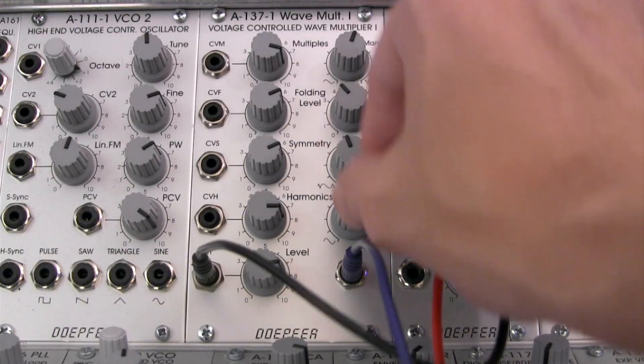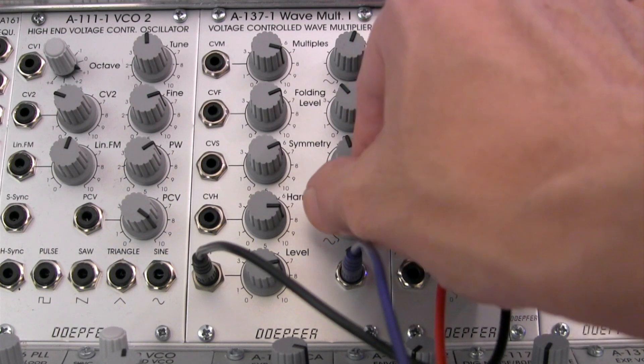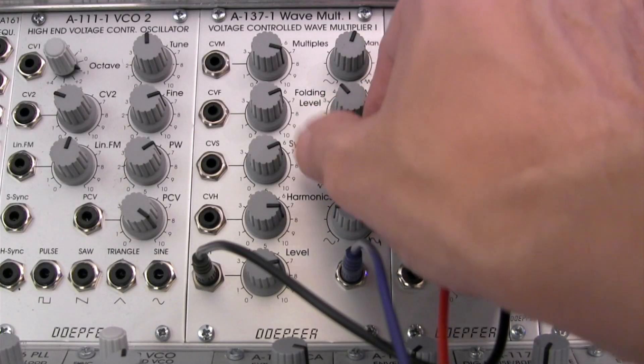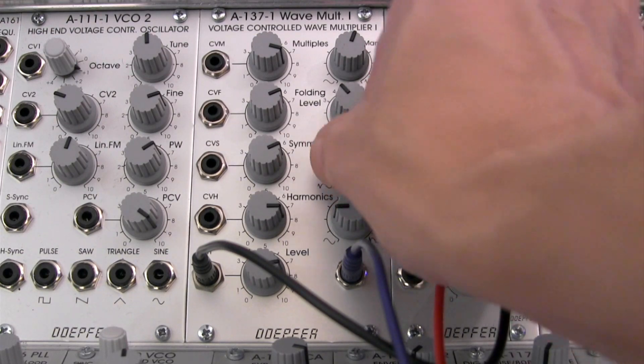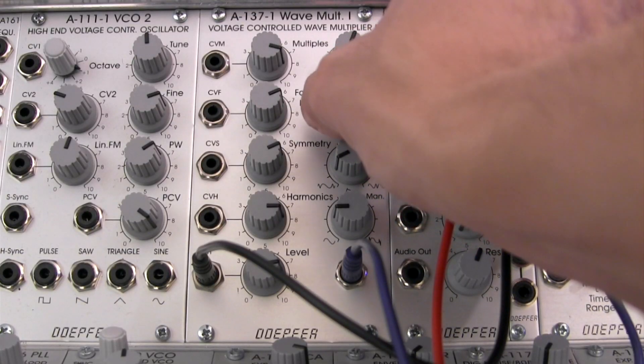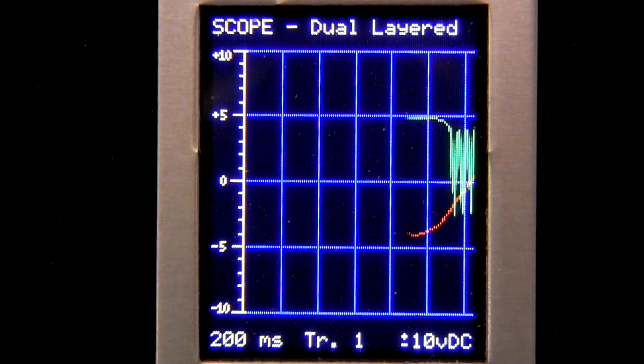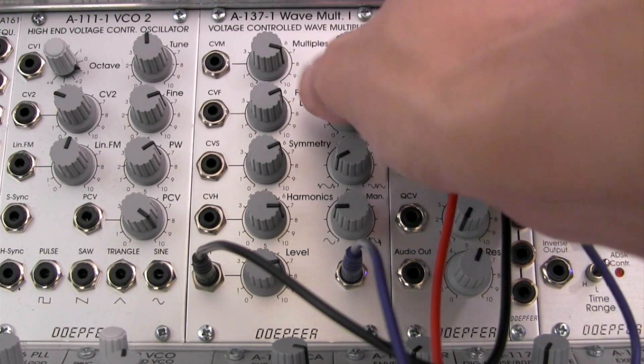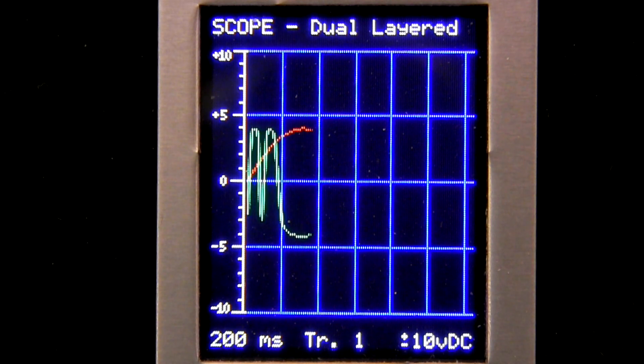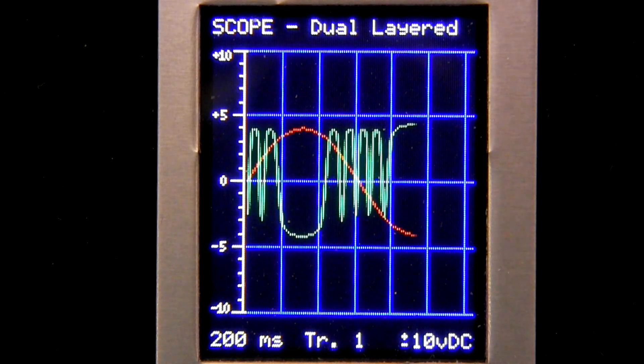I'm going to play around with the actual harmonics. I'm going to bring those down just a little bit. And then I'm going to bring down the symmetry. Again, the symmetry is going to move the upper and lower clipping level together. Let's see what kind of effect we get from that. And I'm going to move the folding level and see where we get from there. Just doing a little bit more adjusting. Okay. And I just want to get it in a middle ground that we can use now for our modulation.